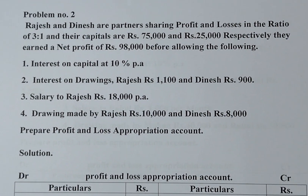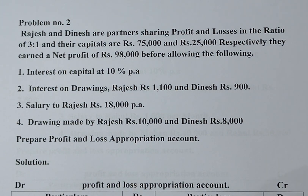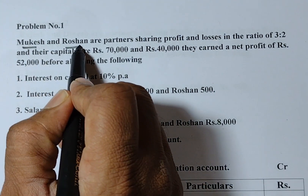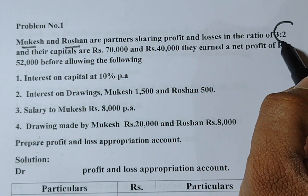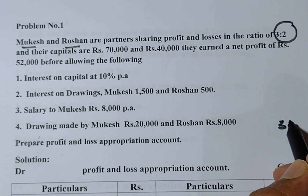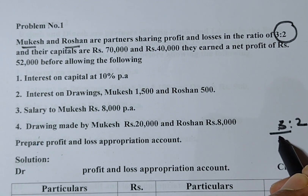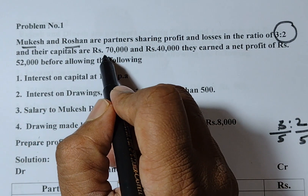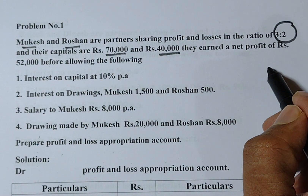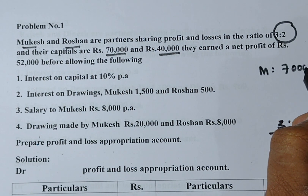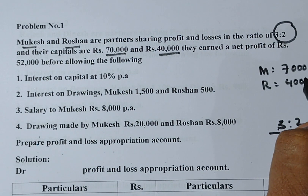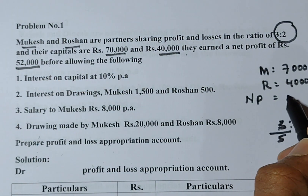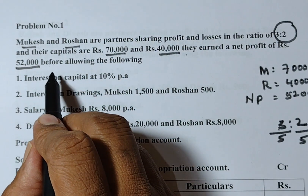Please look into problem number one. There are two partners — Mukesh and Roshan — sharing profits and losses in the ratio of 3:2. So Mukesh's share is 3/5 and Roshan's share is 2/5. Their capitals are rupees 70,000 and rupees 40,000 respectively. The net profit earned by the business is rupees 52,000, before allowing the following.